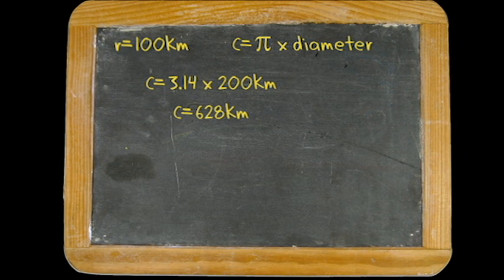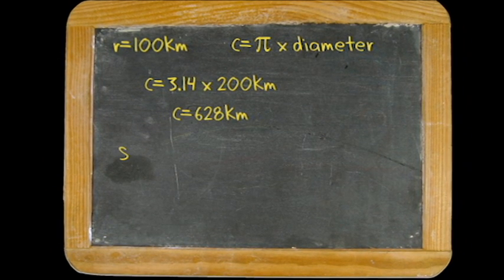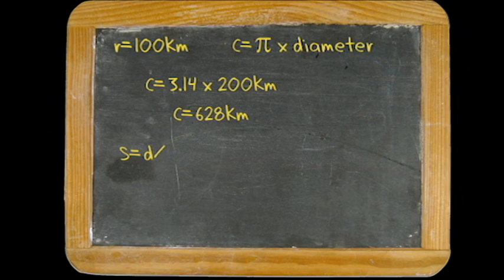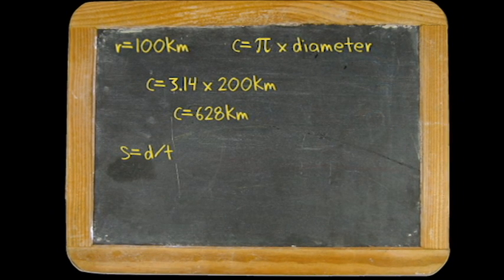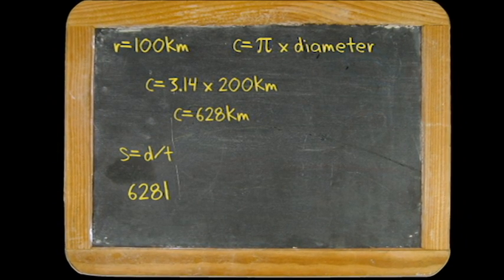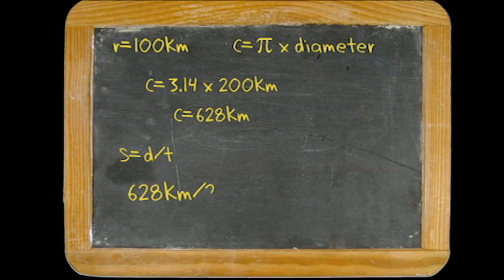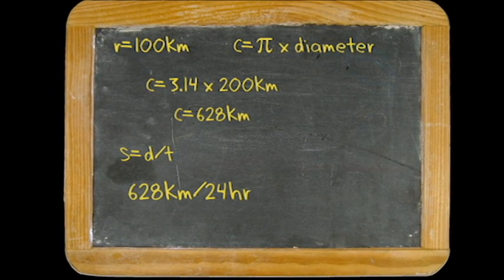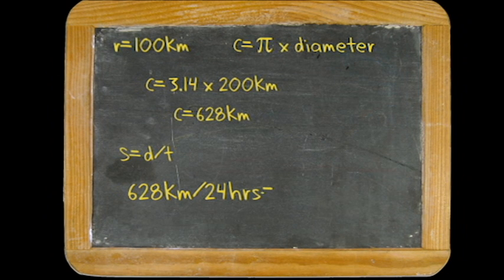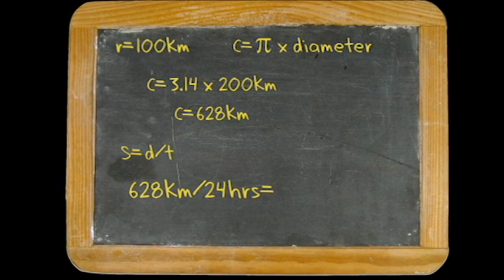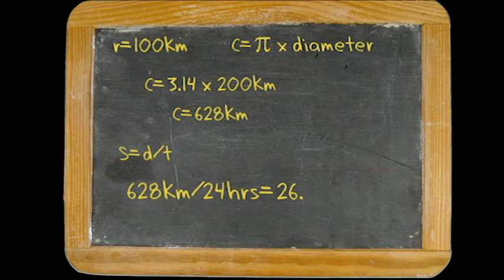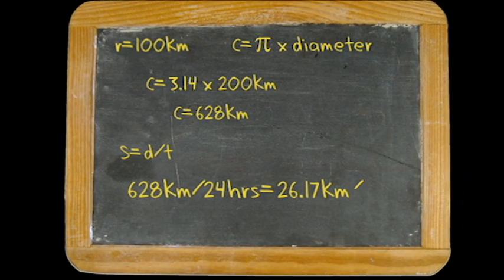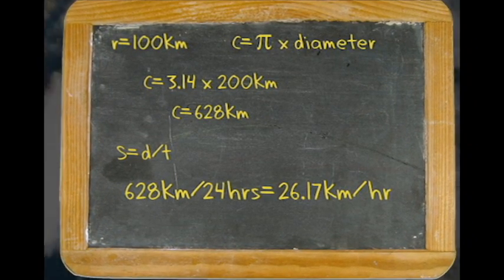Now we can use the formula for speed: speed equals distance divided by time. We plug in 628 kilometers for the distance traveled and 24 hours for the time. When we do the math, we find that Earth was rotating at a speed of about 26.17 kilometers per hour right around the pole.